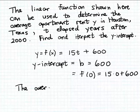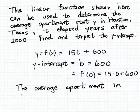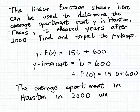So the average apartment rent in Houston in 2000, which corresponds to elapsed year 0, was $600.